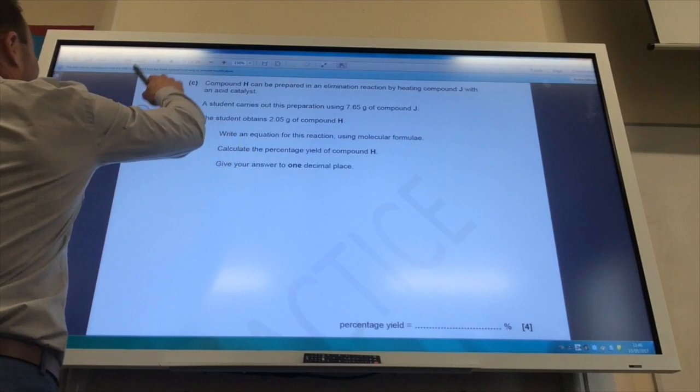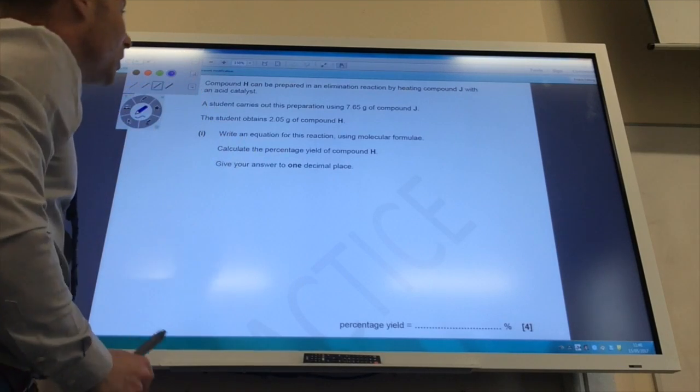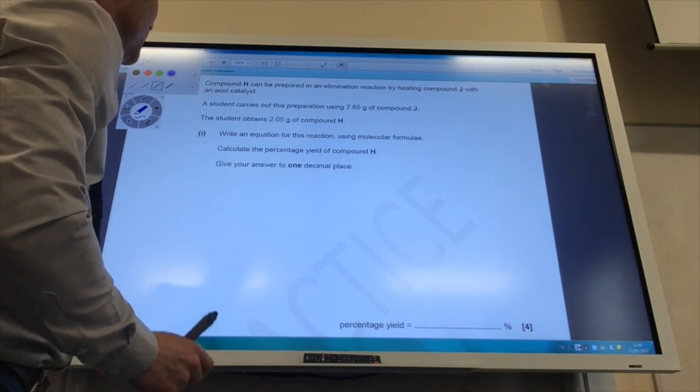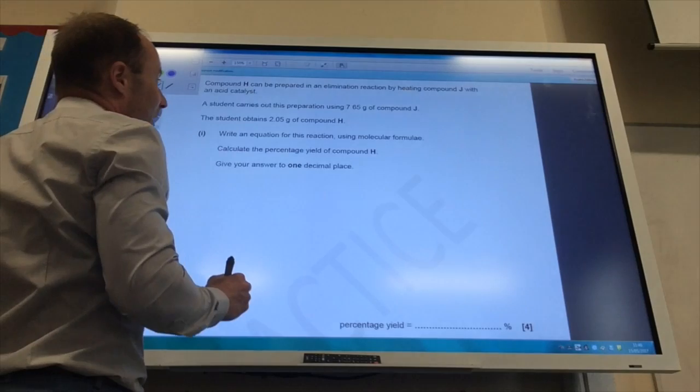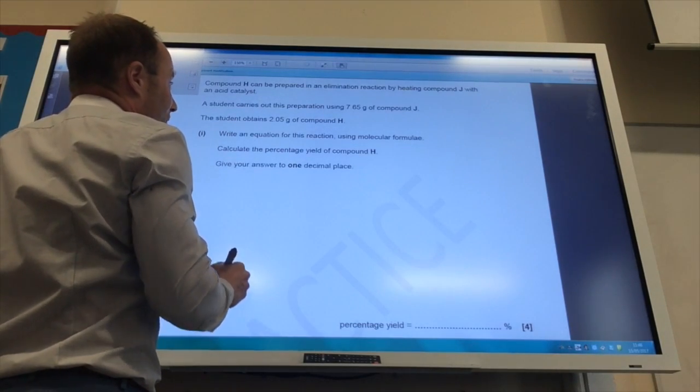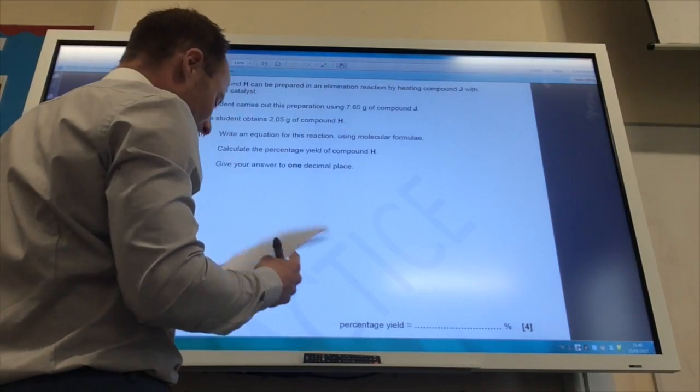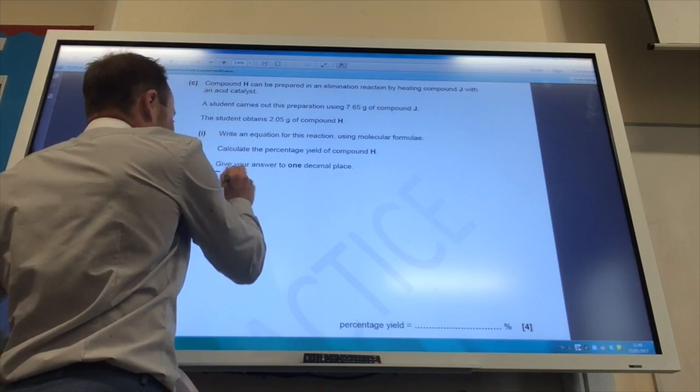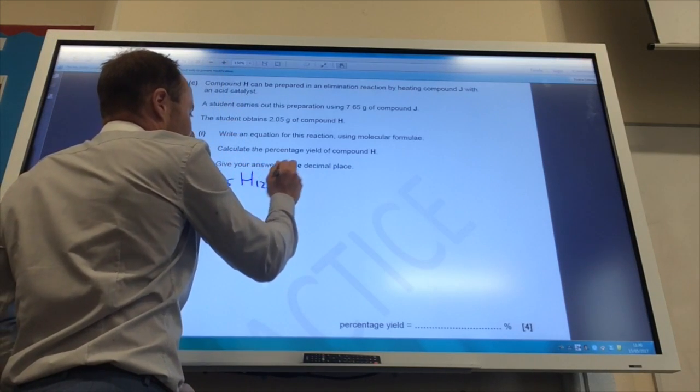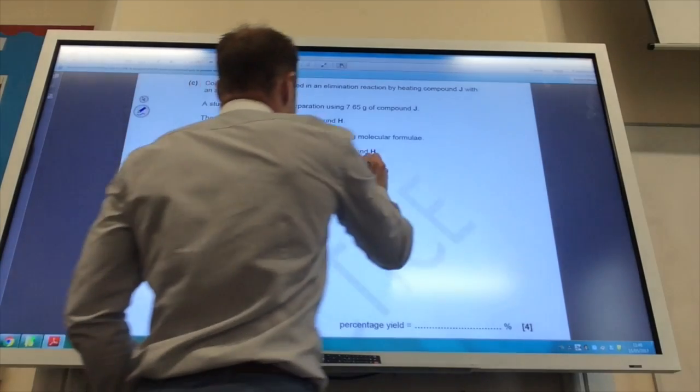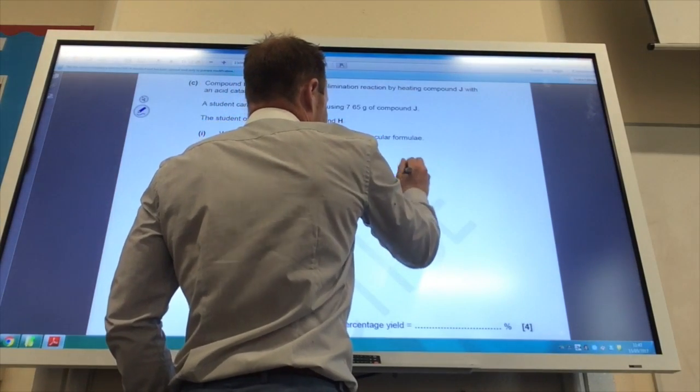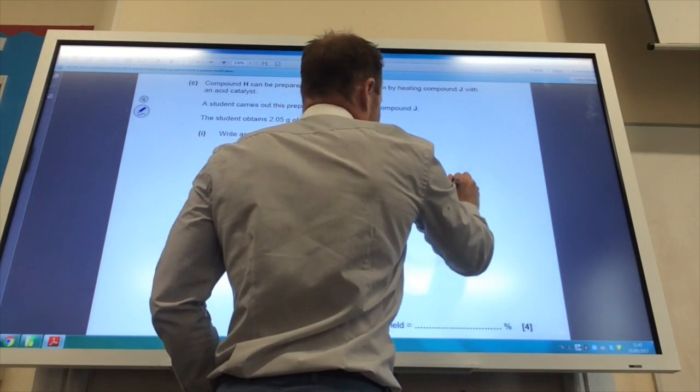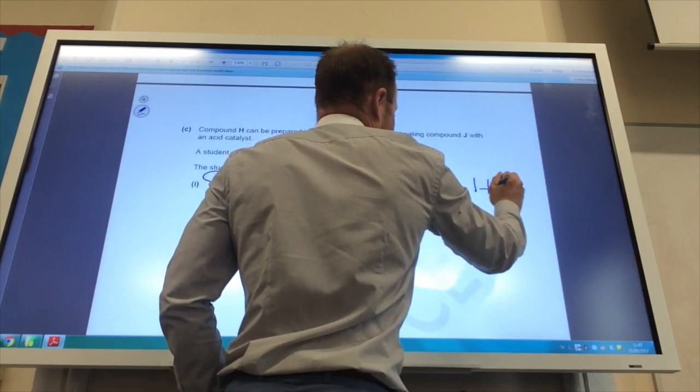Compound H can be prepared by an elimination reaction. And now it wants me to work out the percentage yield. I'm starting with 7.65 grams of compound... Oh, it wants me to write down the equation, first of all. So we have got C6H12O goes to give me C6H10 plus H2O.